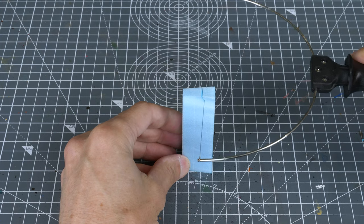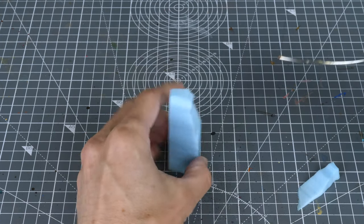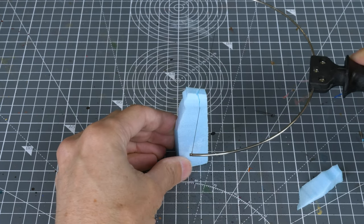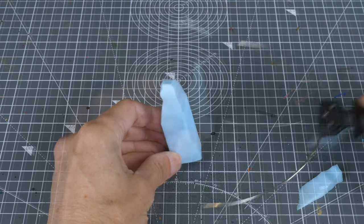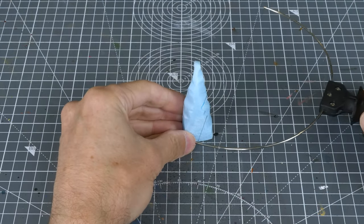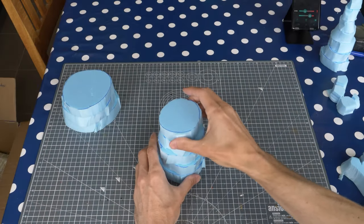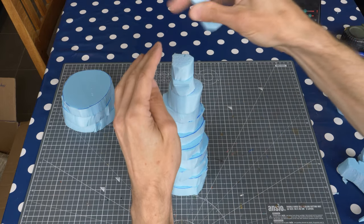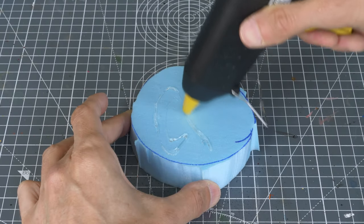I'm now carving the point for the spire. Next I'm going to stack the circular blocks to check that I'm happy with the size and general structure.